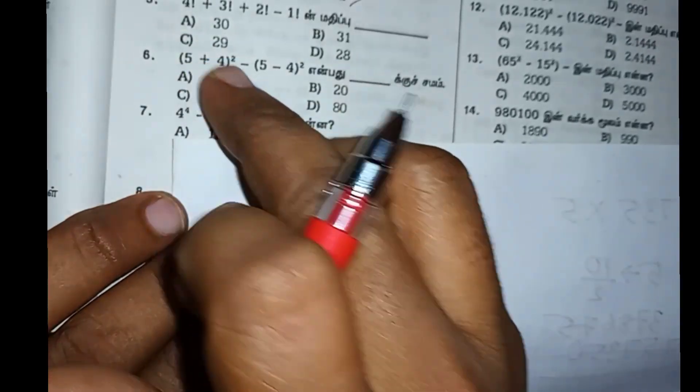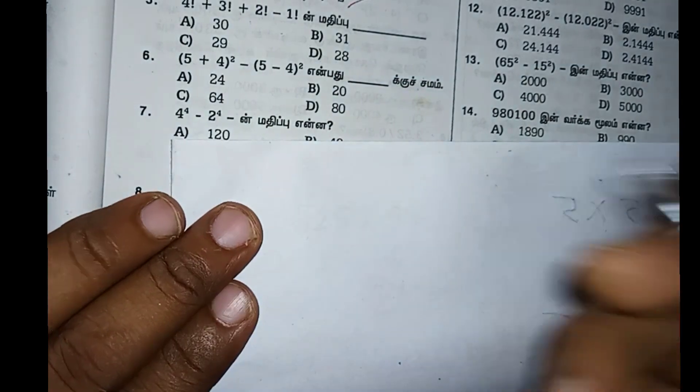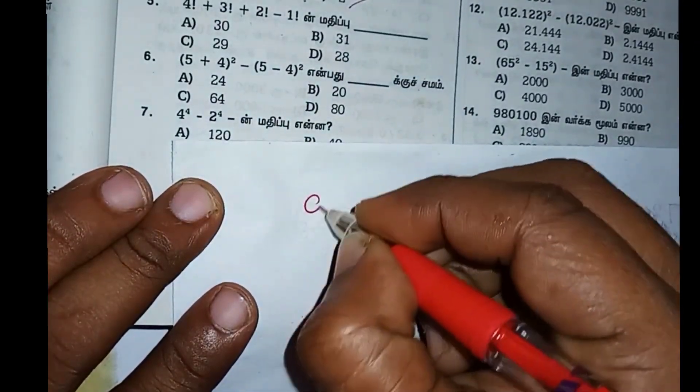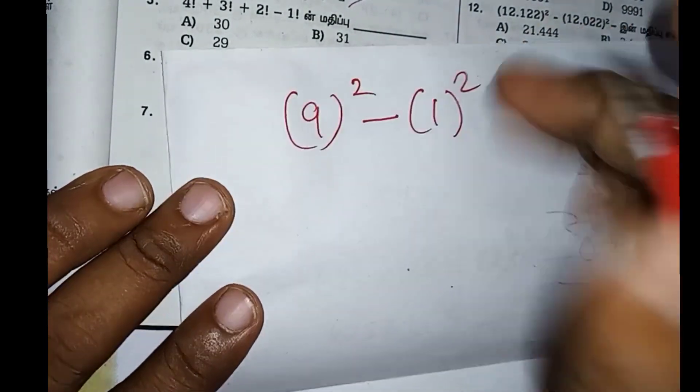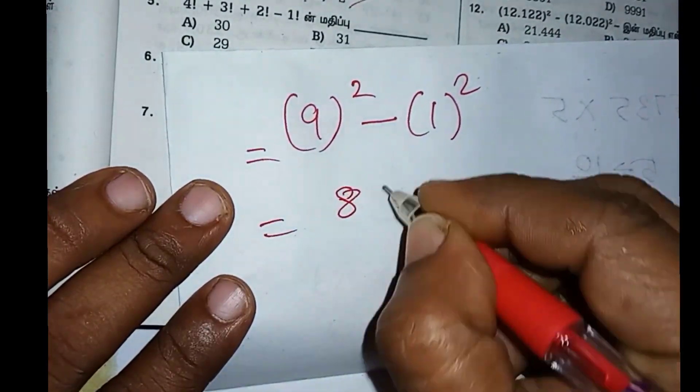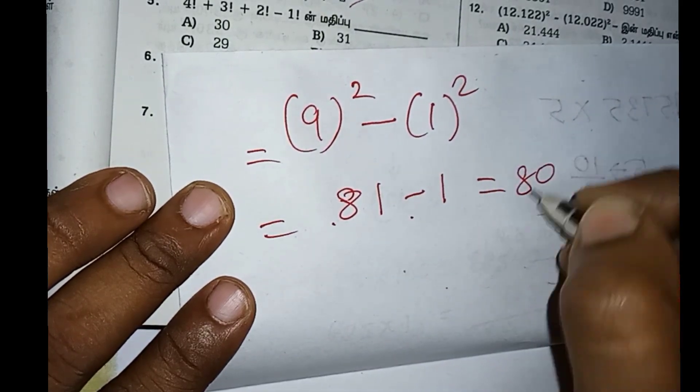Now 5 plus 4 square minus 5 minus 4, the value is 1 square. 5 plus 4 equals 9, so 1 square. If we know which value is 81, then 1 square is 1. So 81 minus 1 equals 80.